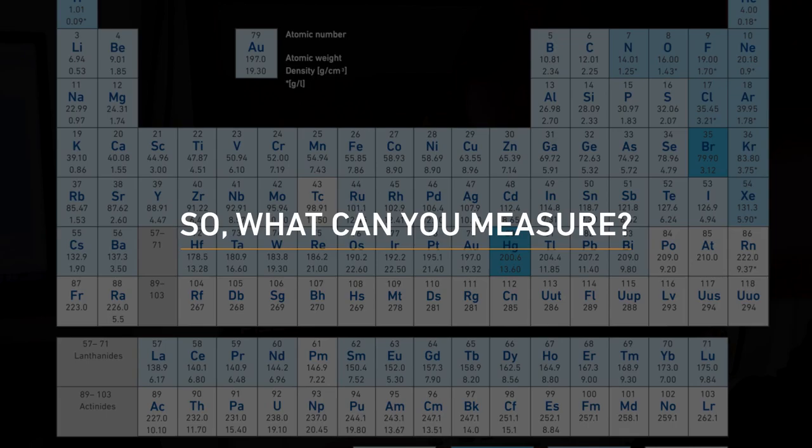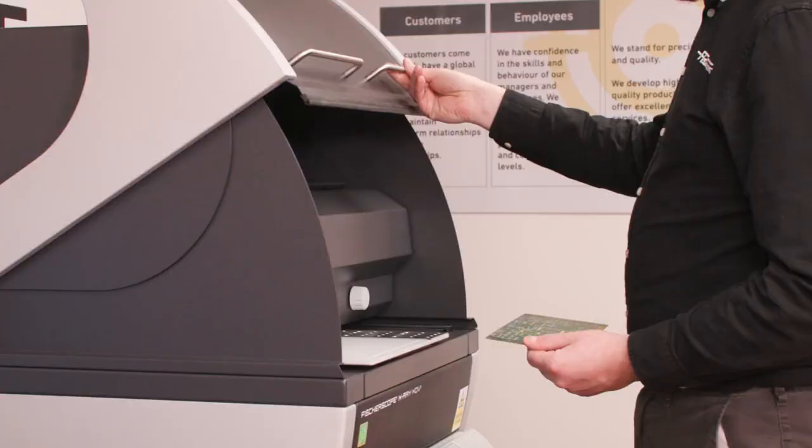You can measure a wide range of elements, from aluminium to uranium, including titanium-aluminium nitride, nickel-phosphorus, ENIG, ENIPIG, and others.